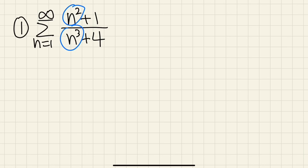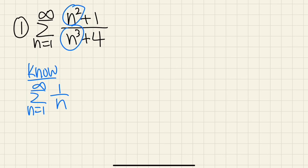In this case, we're just trying to ignore the plus 1 and plus 4. If we are just looking at the series as n goes from 1 to infinity of 1 over n, this is the harmonic series, which diverges.